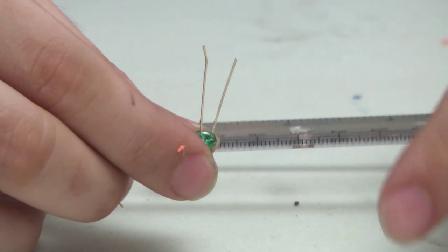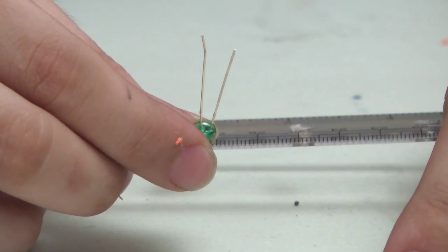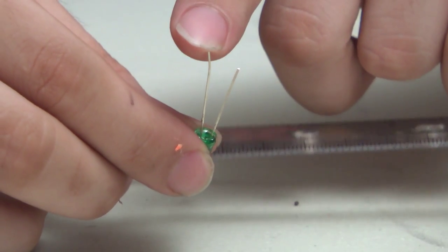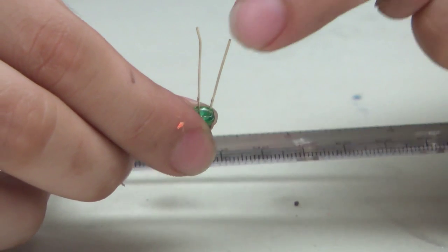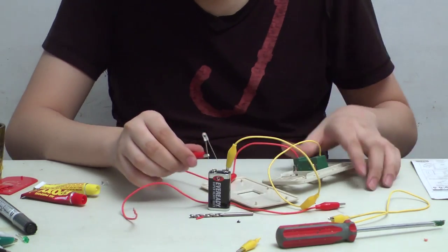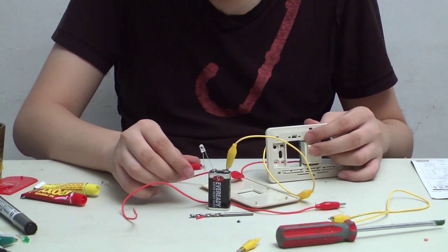So to know the polarity of the bulb, it has two connectors. The longest connector will be positive, while the shortest one will be negative. So if we connect that to the wires, switch, and battery, it should work.